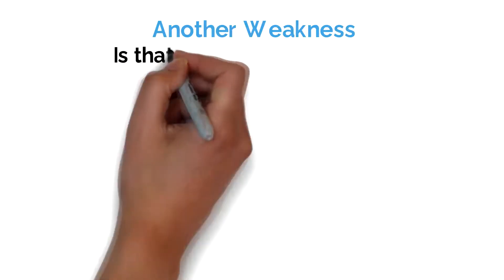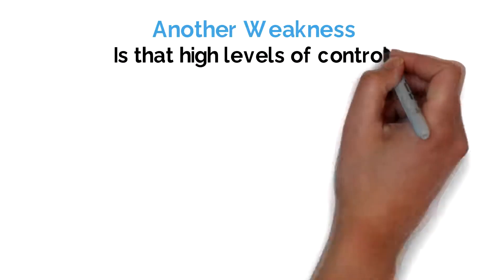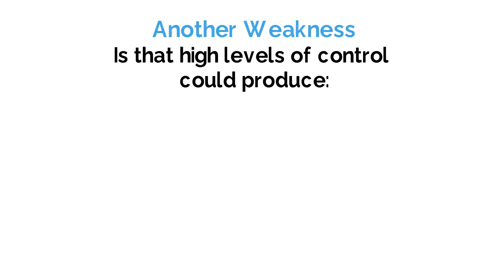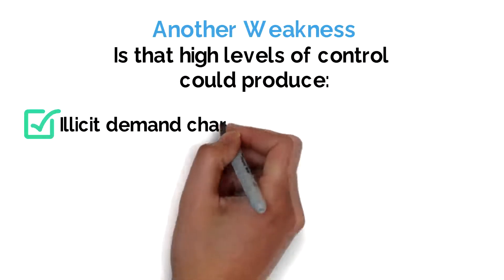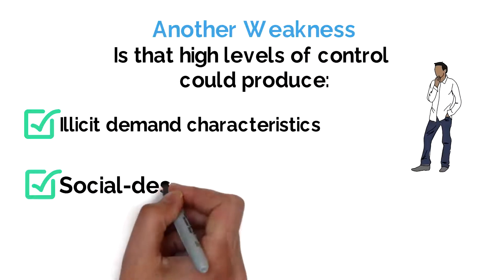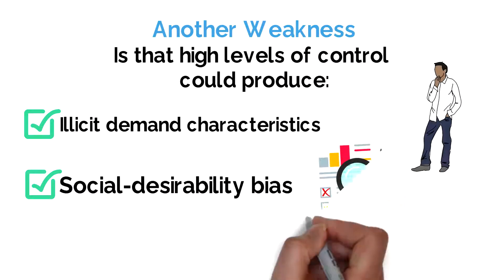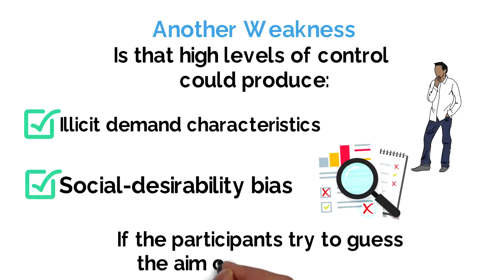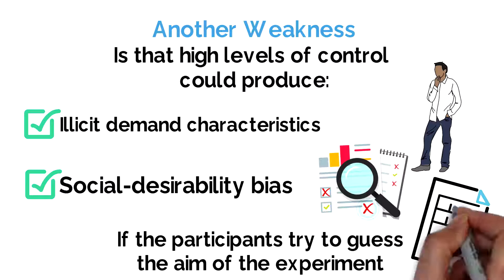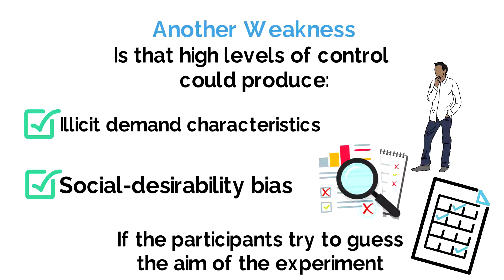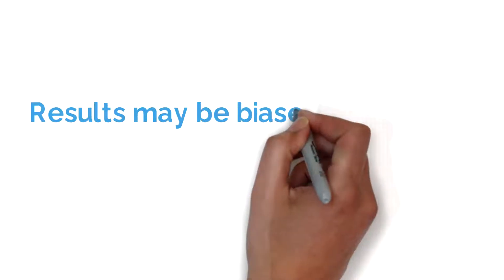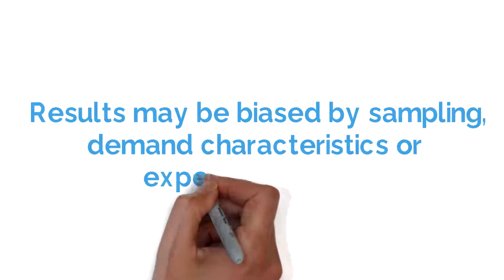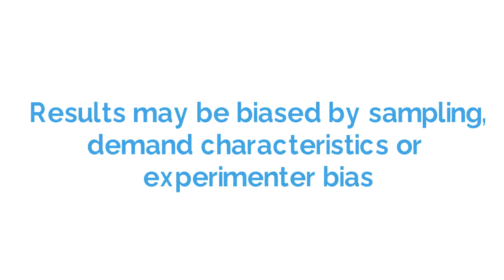Another weakness is that high levels of control could elicit demand characteristics from participants, or they may respond to social desirability bias if they try to guess the aim of the experiment from the controls, unintentionally or otherwise. A further weakness is that results may be biased by sampling issues, demand characteristics, or experimental bias.